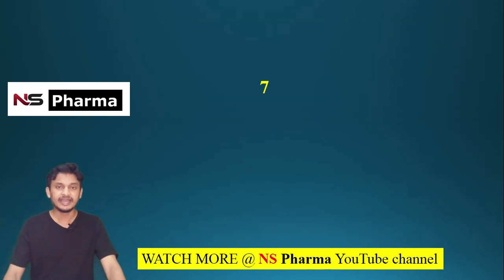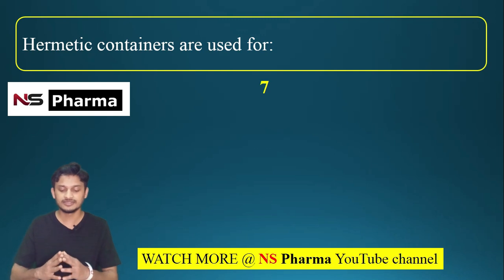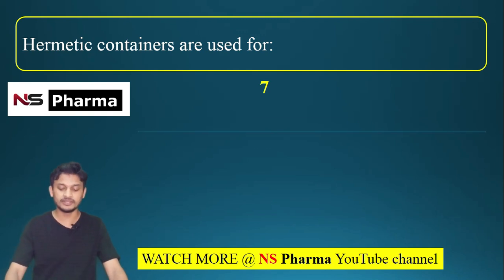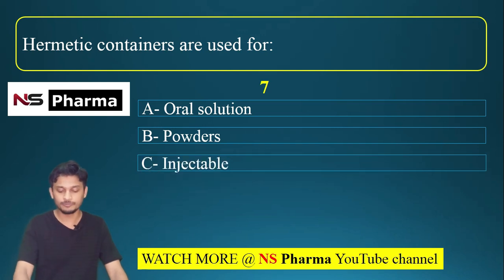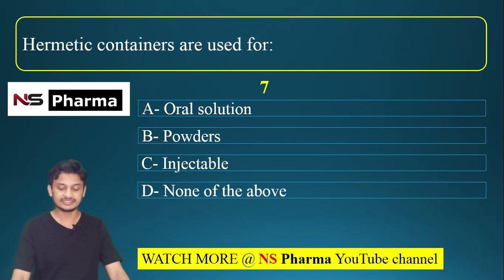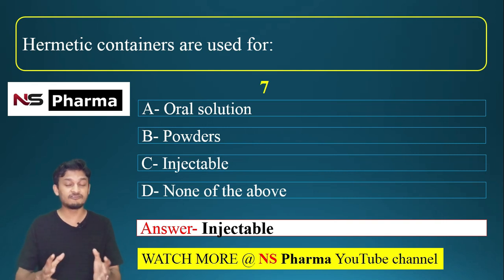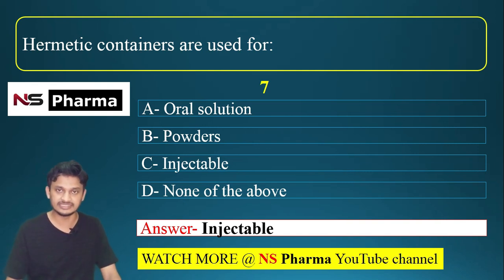Question number 7: hermetic containers are used for — options are oral solution, powders, injectable, or none of the above. The correct answer is option C, injectable. Hermetic containers are used for injectables. Hermetic containers are containers that prevent the passage of air, oxygen, or any other gases inside the container.